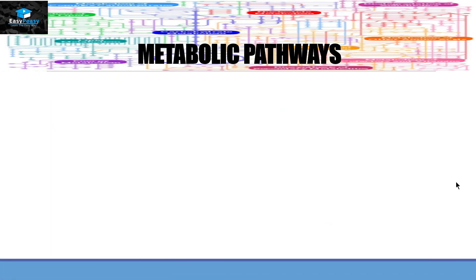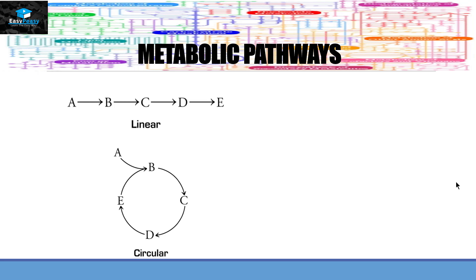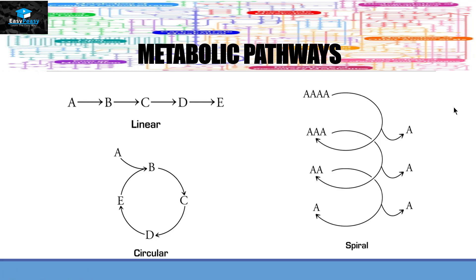Metabolic pathways can be present in three different forms. They can be linear, in which the first product becomes the reactant of the next — A transforms into B, and B transforms into C. They can be circular, as seen in the citric acid cycle, where A makes B, B makes C, C makes D, D makes E, and E makes B again.